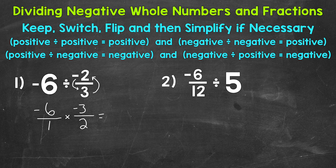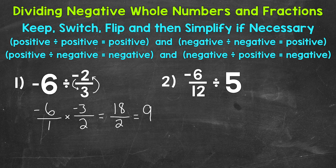Negative six times negative three: a negative times a negative equals a positive, so this is going to be 18. And then one times two, the denominators, equals two. So we have 18 over two — that's an improper fraction, so we want to convert this. It works out perfectly to a whole number: 18 divided by two is nine, with no remainder. So our final answer is positive nine. Negative six divided by negative two thirds equals nine.